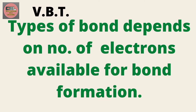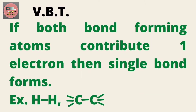Actually, this concept was explained very well by valence bond theory. Valence bond theory says that formation of single, double, or triple bond depends on the number of electrons shared by bond-forming atoms — that is, how many electrons the atoms forming the bond are sharing.